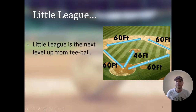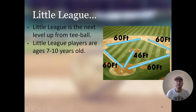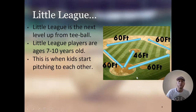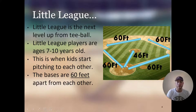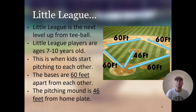The next level is Little League, the next level up from t-ball. Little League players are ages 7 to 10 years old — these ages are general, as players can play up depending on when their birthday falls. This is when kids start pitching to each other. The bases are 60 feet from one another, and the pitching mound is 46 feet from home plate — that is the smallest pitching distance when players start pitching in Little League.